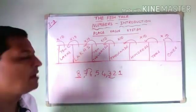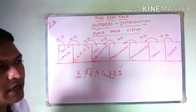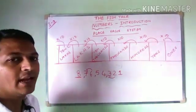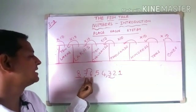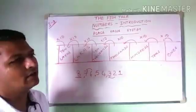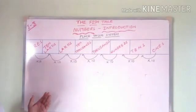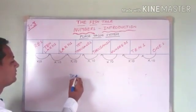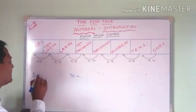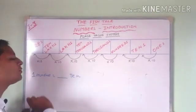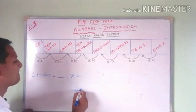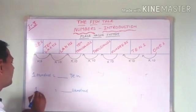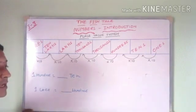The number name for this is eight crores seventy-six lakhs fifty-four thousand three hundred and twenty-one. Just as how we have names for ourselves, numbers also have names. Now, let's understand a practical example: if you have 10 rupee notes and want to make 100 rupees, how many 10 rupee notes will you need? Or if you have 100 rupee notes and want to make 1 lakh rupees, how many 100 rupee notes will you need?